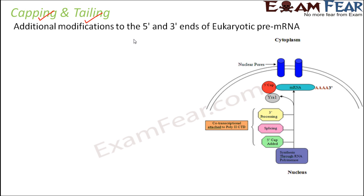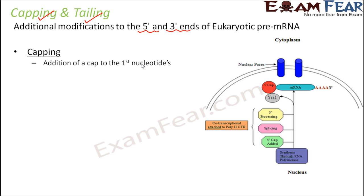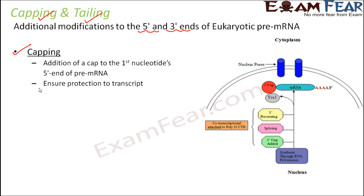Capping means adding a cap to the first nucleotide's 5' end of the pre-mRNA. As soon as the pre-mRNA is formed, the 5' end will have a cap-like structure. Capping is the first modification that takes place in the initially formed mRNA. This ensures protection to the transcript. The initial mRNA carries very important sequence information that will decide the sequence of amino acids and help in protein synthesis, so this information needs to be protected.